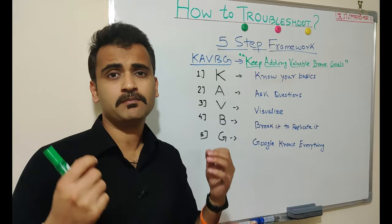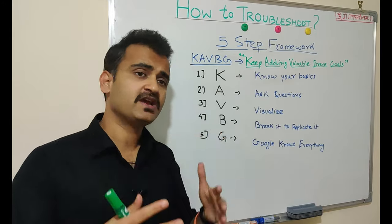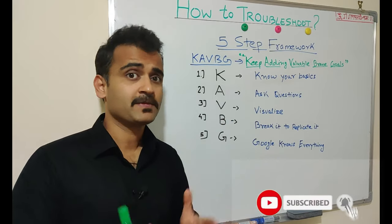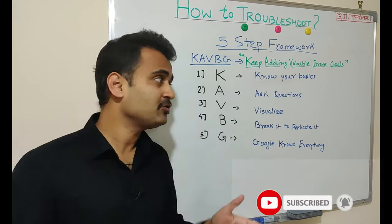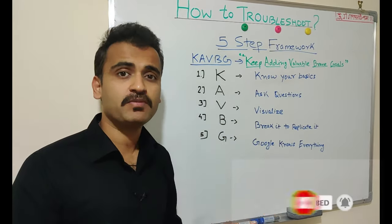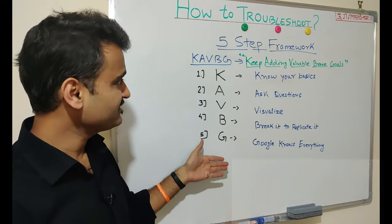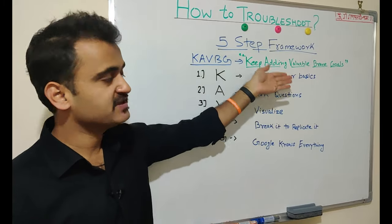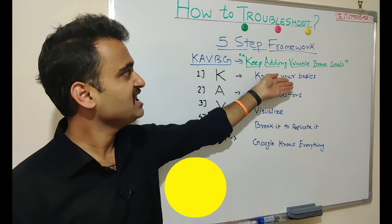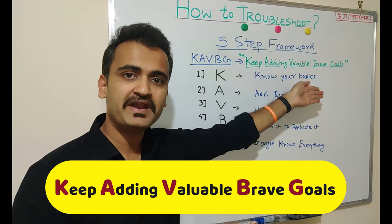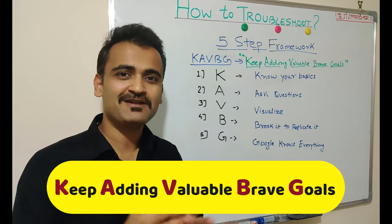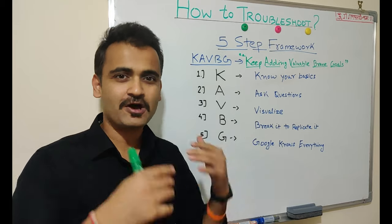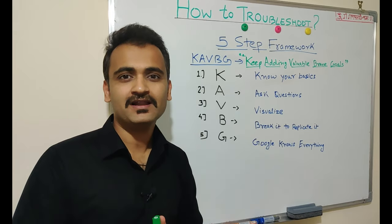So friends, I hope you are now clear with these five steps. To memorize this framework, I have created a brain tattoo: K-A-V-B-G, which stands for 'Keep Adding Valuable Brave Goals.' You can always remember this brain tattoo whenever you are trying to troubleshoot. Now let's quickly take a real IT issue and apply this framework.